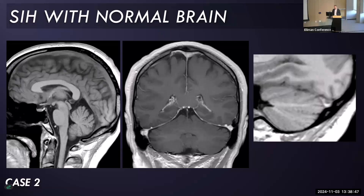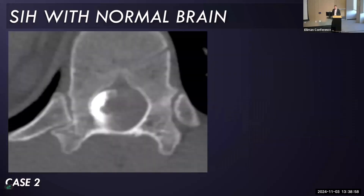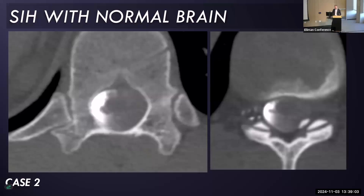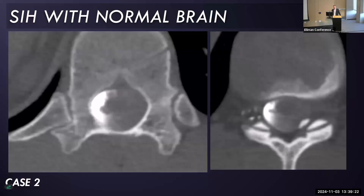This patient also had what I would consider a normal brain MRI — no brain sagging, no dural enhancement, no venous distention sign. The video isn't going to work, but this patient was found to have a CSF venous fistula. So sometimes normal brain imaging is associated with abnormal findings on the myelogram, and we have to be diligent in looking at those. I want to review the first set of brain imaging before saying it's negative.